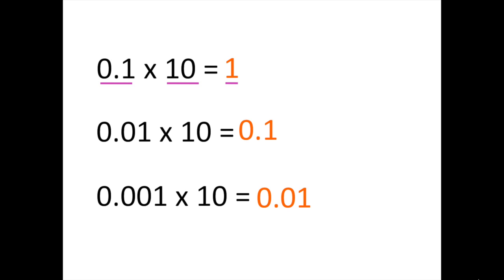If you look at each of these problems and compare the answer to the original factor, we can see that the decimal place, when multiplying by 10, moves one place to the right because the number is getting 10 times bigger. In our first problem, 1 tenth times 10, the decimal moved one place to the right to get an answer of 1. In our second problem, 1 hundredth times 10, the decimal moved one place to the right for an answer of 1 tenth. In our last problem, 1 thousandth times 10, the decimal moved one place to the right for an answer of 1 hundredth.